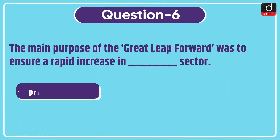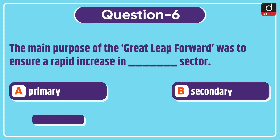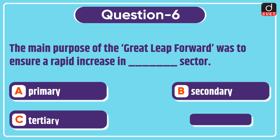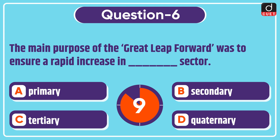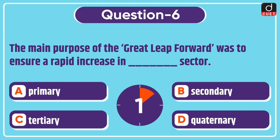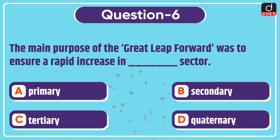Next question: the main purpose of the great leap forward was to ensure a rapid increase in dash sector. Primary, secondary, tertiary, or quaternary? The correct answer is option B, secondary.